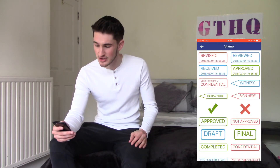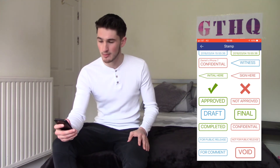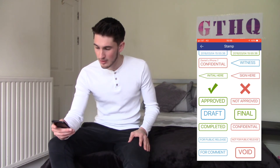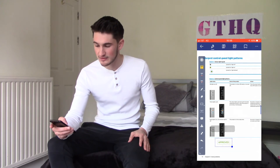Another great feature, which could be incredibly useful for contracts and other documents, is the stamp tool. It has a variety of different stamps you can use, such as approved, final, or void. So for example, with the approved stamp, you press it and can then move it around to where you want and change the size.